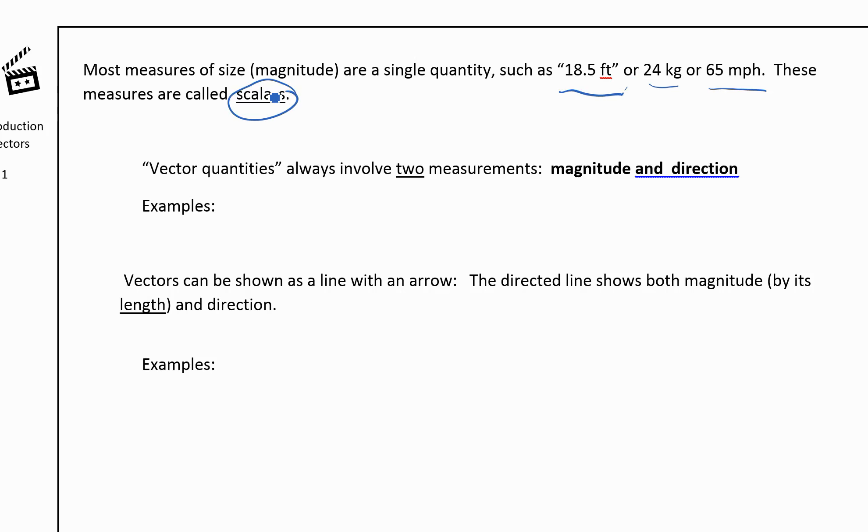Now vector quantities are actually going to have two measurements: a magnitude and a direction. So for example we could say that maybe you're driving 65 miles per hour south. That gives us how fast you're driving and a direction.